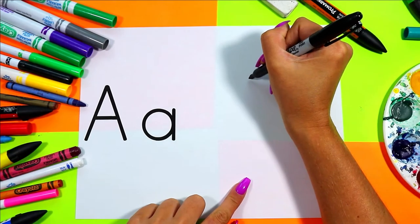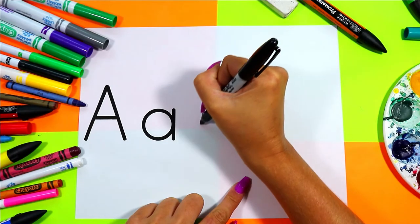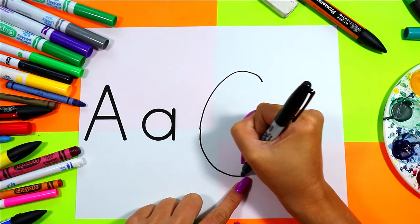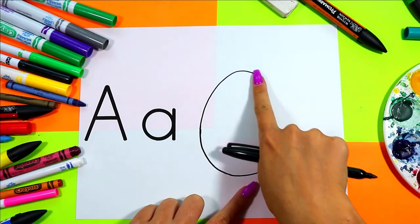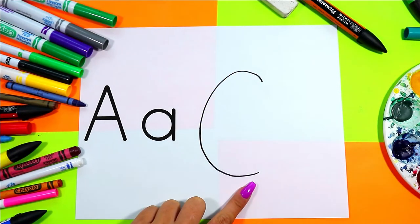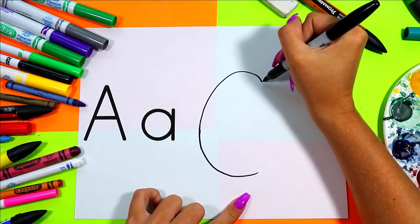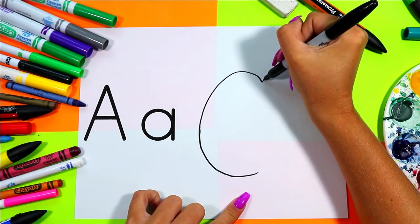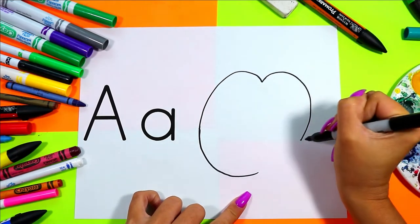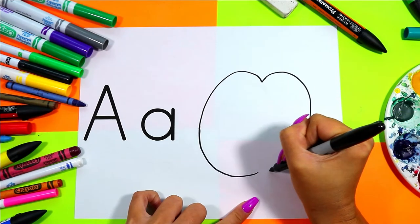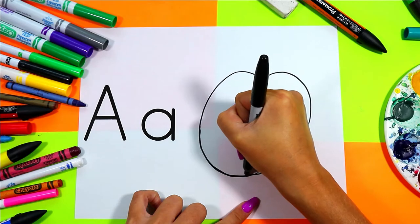First we're going to draw one line up, around, and down. Up, around, and down. On the other side we're going to draw another line that goes up, around, and down, and it's going to connect with the first line.